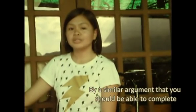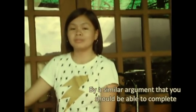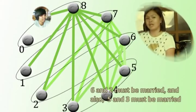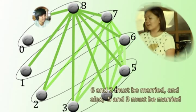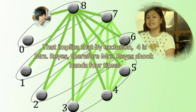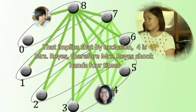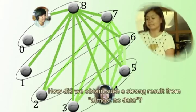By a similar argument that you should be able to complete, six and two must be married, and also five and three must be married. That implies that by exclusion, four is Mrs. Reyes. Therefore, Mrs. Reyes shook hands four times.